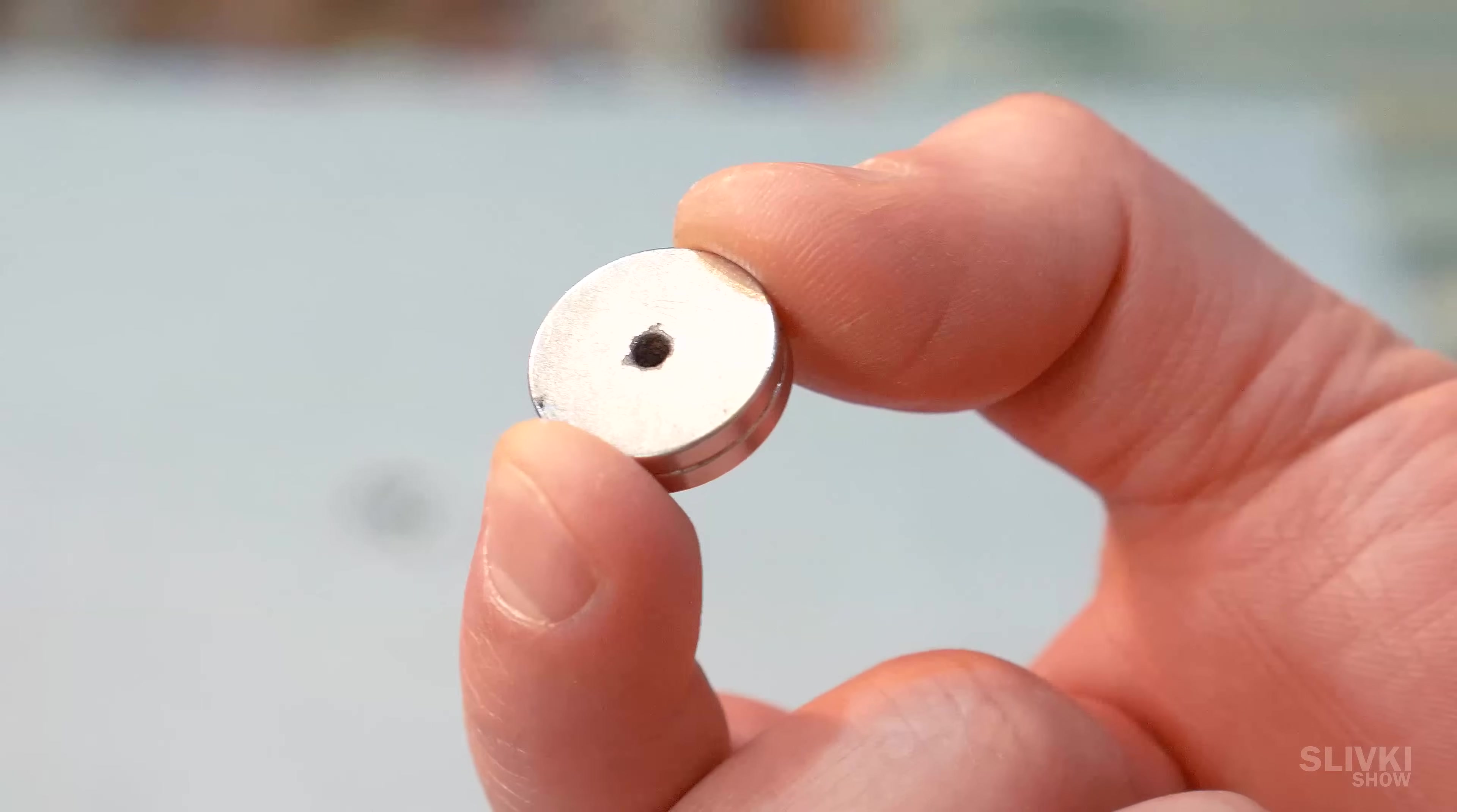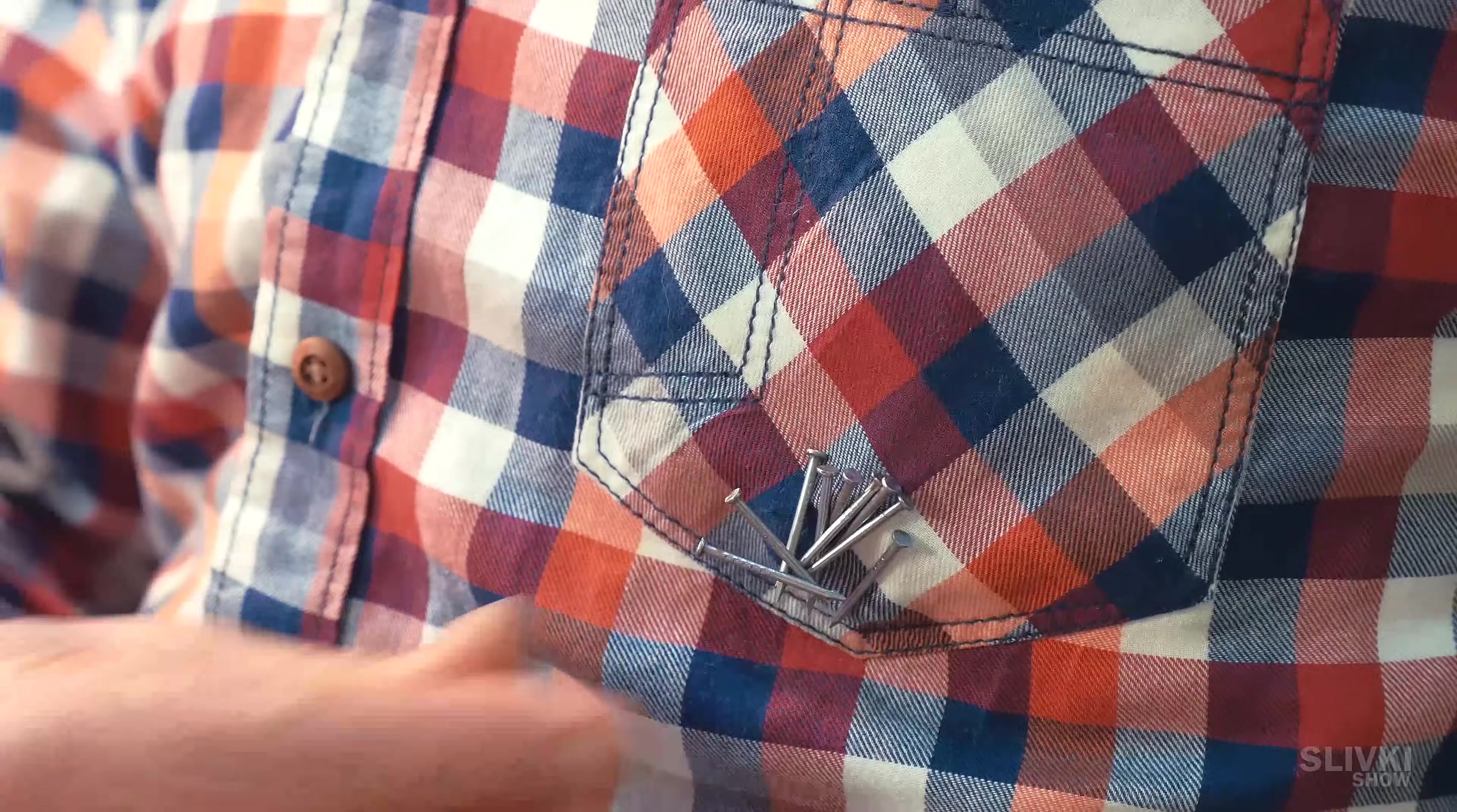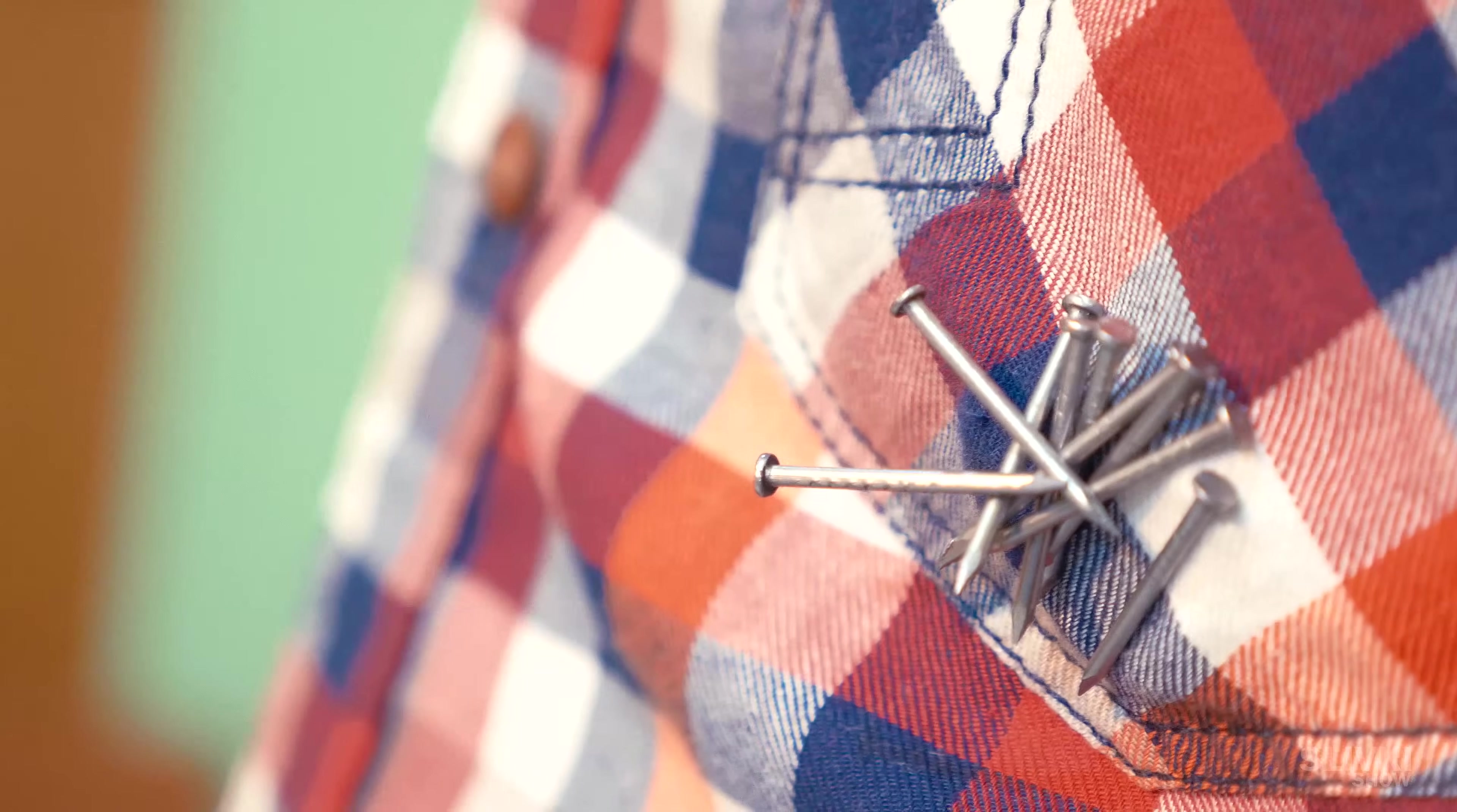Take a magnet about the size of a coin and drop it in your pocket. Now when working with a hammer, you will hold nails nearby, and it will be easier to reach them.